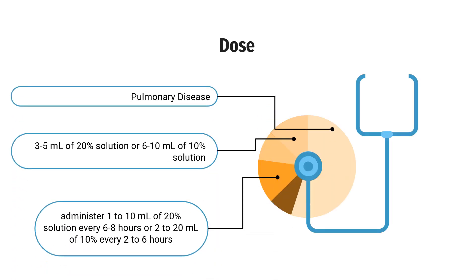Dose — Pulmonary disease. For facilitation of expectoration and biomucolysis: 3–5 mL of 20% solution or 6–10 mL of 10% solution may be used. Administer 1–10 mL of 20% solution every 6–8 hours, or 2–20 mL of 10% solution every 2–6 hours. For diagnostic bronchography: 1–2 mL of 20% solution or 2–4 mL of 10% solution, administered 2–3 times by nebulization or by intratracheal instillation prior to the procedure.